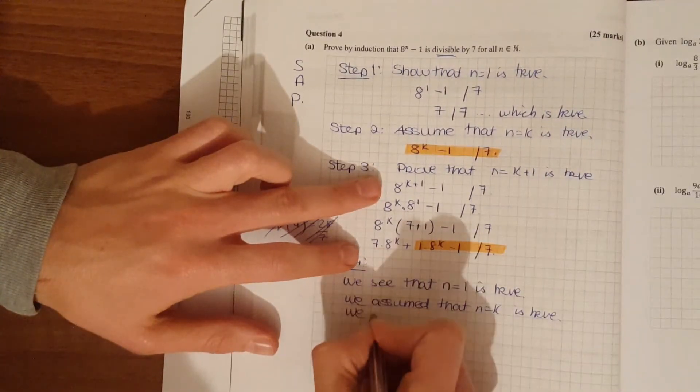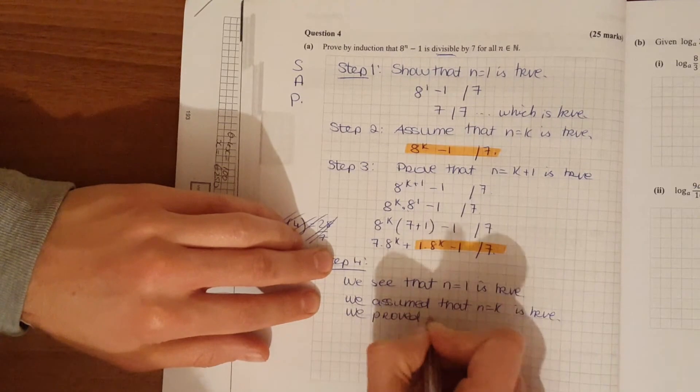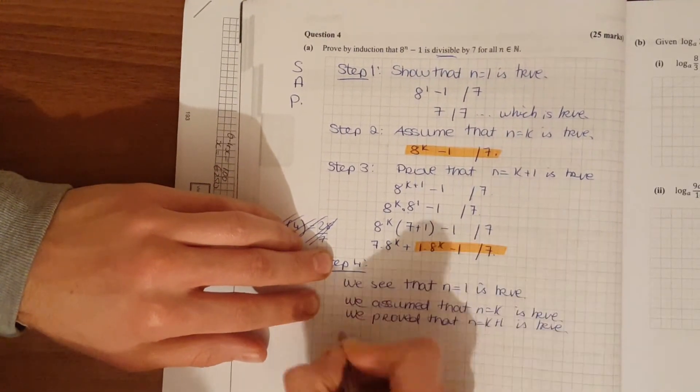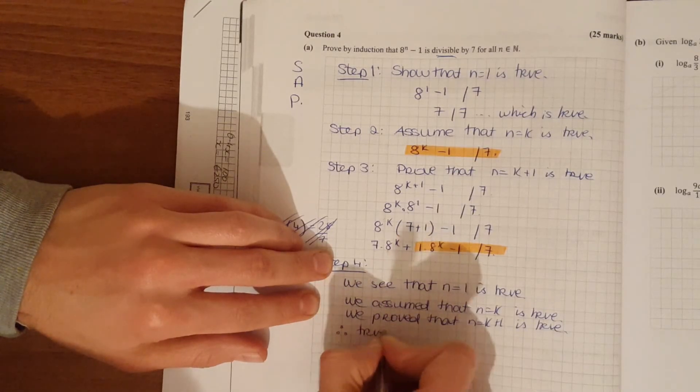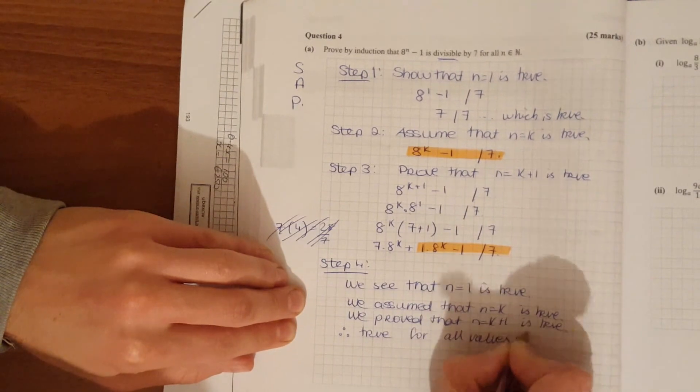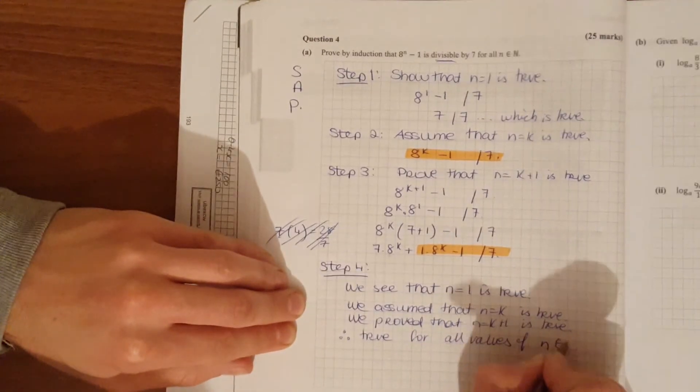And we prove that n is equal to k plus 1 is true. Therefore, true for all values of n is an element of n.